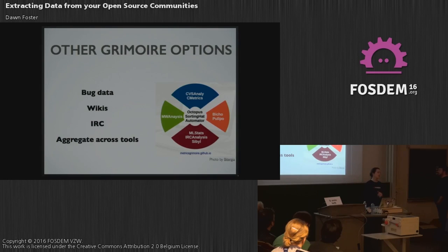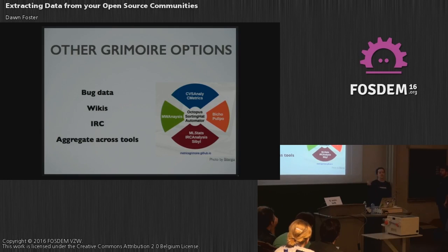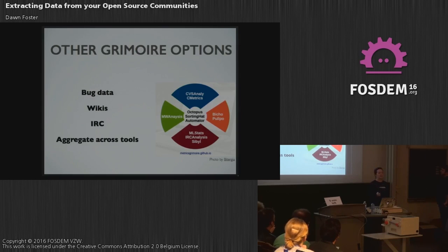I talked about MLStats and CVSAnaly mainly because those are the two I use most often, but there are lots of other tools. There's Bicho, which looks at bug data or data from your issue tracker. There's another one that looks at wiki data. The tools in the middle are interesting because they help you aggregate across all these different tools. For example, Sorting Hat helps you figure out that the same person who posted a thread on the mailing list is the same person who made a commit, and the same person who did something in your issue tracker — it ties all of those things together.